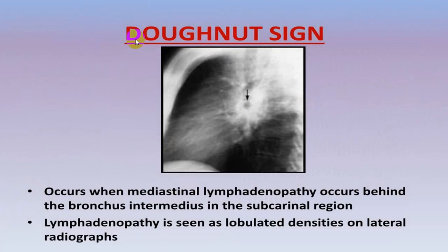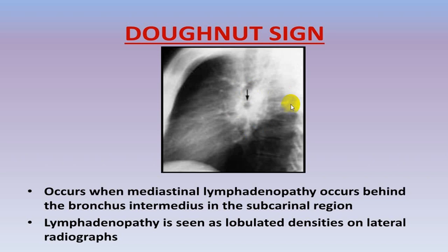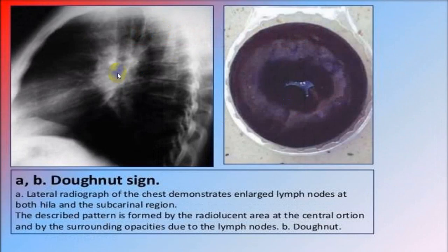The donut sign is because of mediastinal lymphadenopathy occurring behind the bronchus intermedius in the subcarinal region, giving rise to a typical donut appearance — a small central hollow with surrounding opacity.